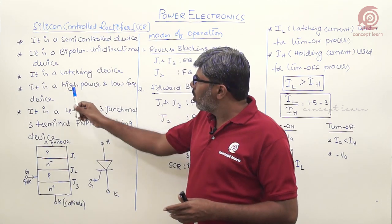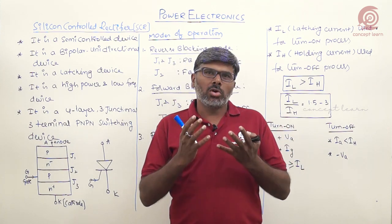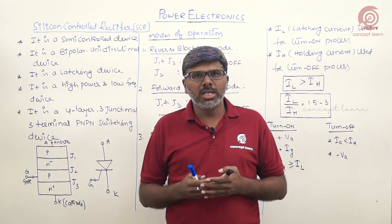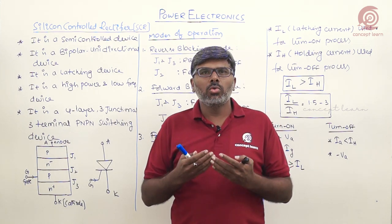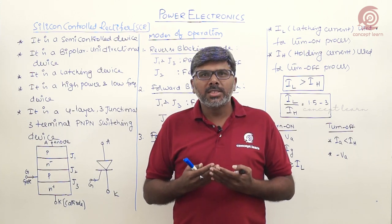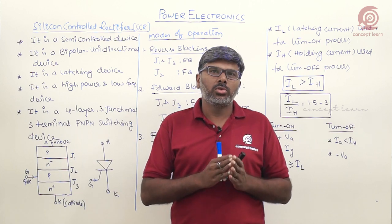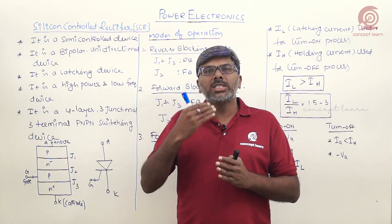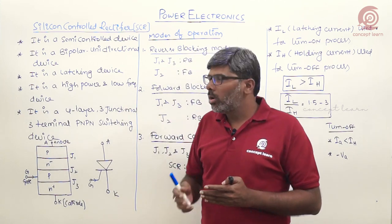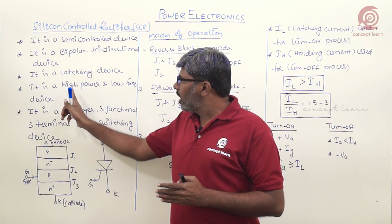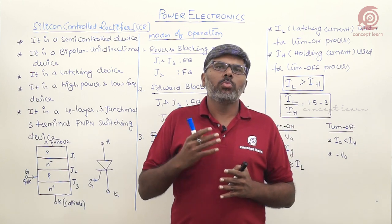SCR allows only one direction of current, that is the forward direction — that is what is called a bipolar unidirectional device. It is also called a latching device because once SCR gets turned on by giving a proper gating signal during its forward bias condition, the gate loses its control over the anode circuit and does not require any control signal to sustain in the on state.